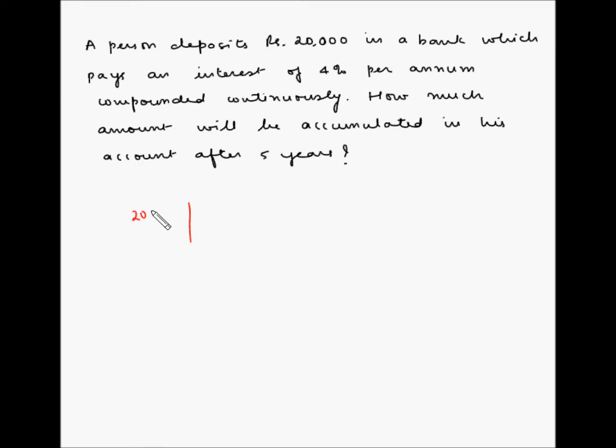So this is first year, this is second year, third year, fourth year, and fifth. Now per annum, the rate of interest is 4%, so 4% is the rate of interest per year.